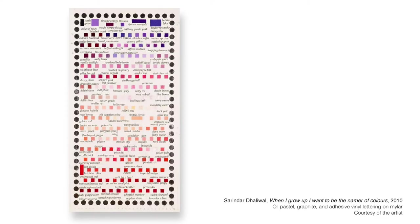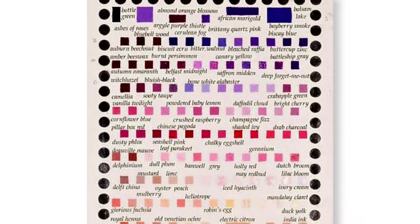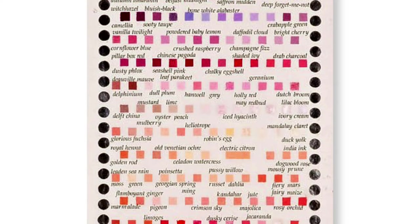Some artists, like Sarinder Dhaliwal, like to give names to the colors they create. She did this in this artwork that she called, When I grew up, I want to be a namer of paint colors.